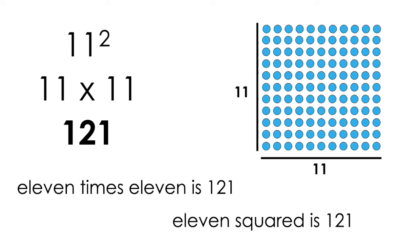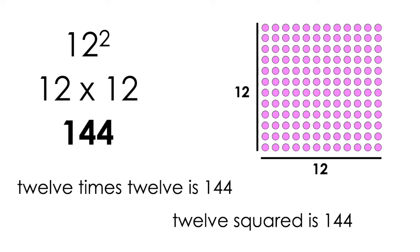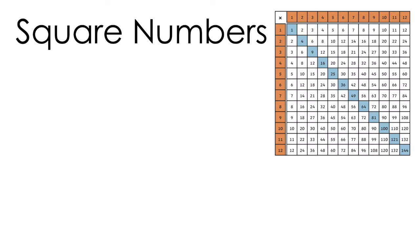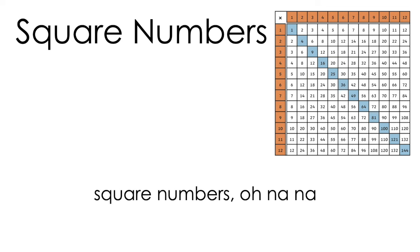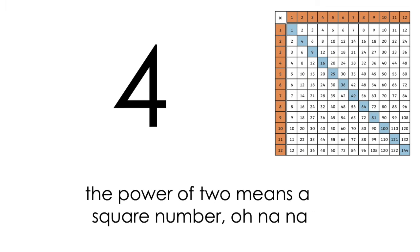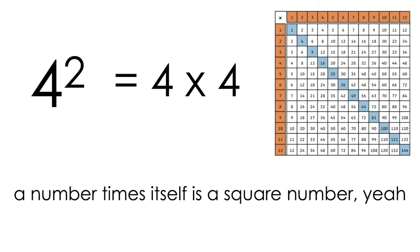11 times 11 is 12, 11 squared is 12. Got me squaring like ooh. 12 times 12 is 144, 12 squared is 144.